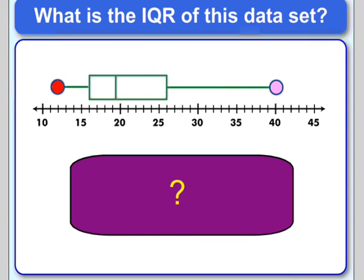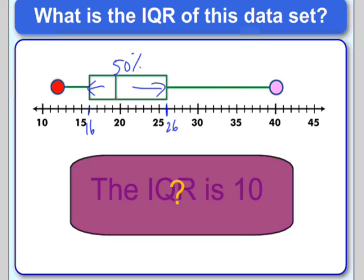So see if you can figure out what the interquartile range is of this data set. Again, see if you can find the third quartile. That would be right here. Look at that first quartile. And then just subtract them. Because the interquartile range is the range of the middle 50%. So it would be 10.